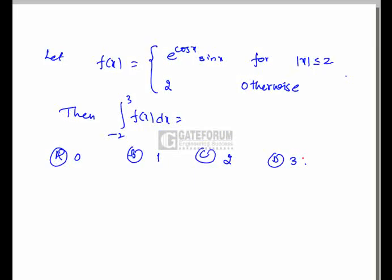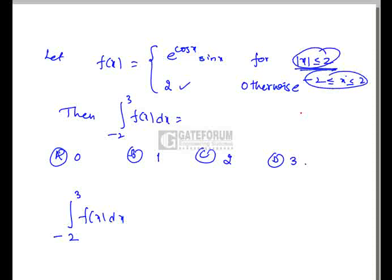The function is f of x which is e to the cos x into sin x if x lies between minus 2 and plus 2 including minus 2 and plus 2, and for any other value of x it is 2. We have to find the value of integral minus 2 to 3 f of x dx. Clearly we have interval minus 2 to 2 and then for any other value it is 2. So, we will split this integral into minus 2 to 2 f of x dx plus 2 to 3 f of x dx.